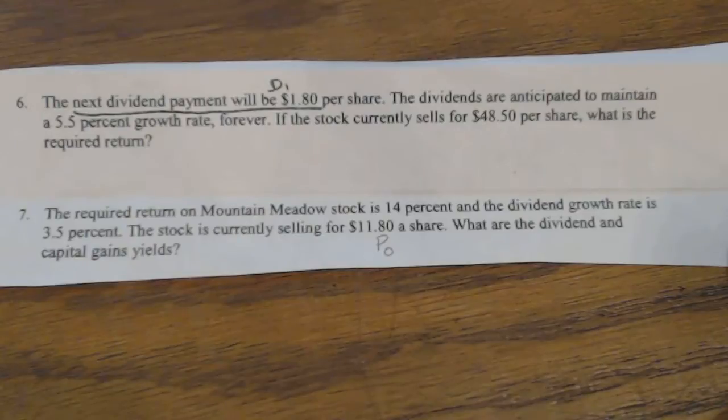So what they've told you here is that the required return is 14%. Required return, remember, is made up of two different parts. R is made up of the dividend yield and the growth rate. So if you know what R is, which is 14%, and you know what the growth rate is, which is 3.5%, then if they're asking you what's the dividend and capital gains yield,